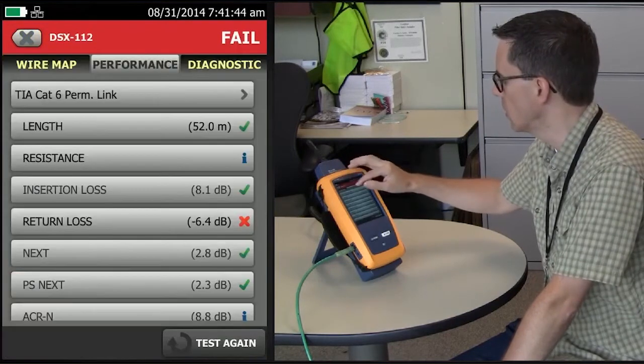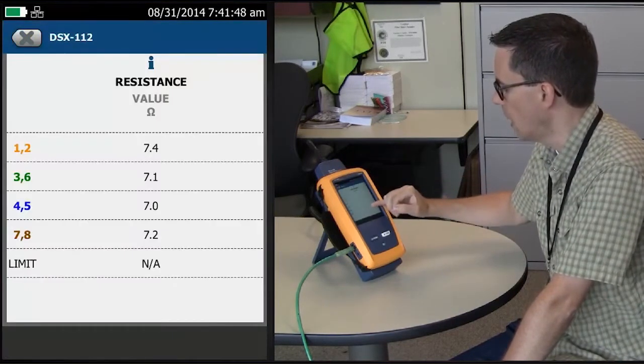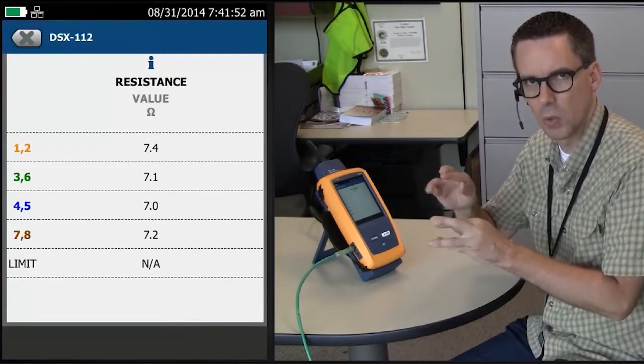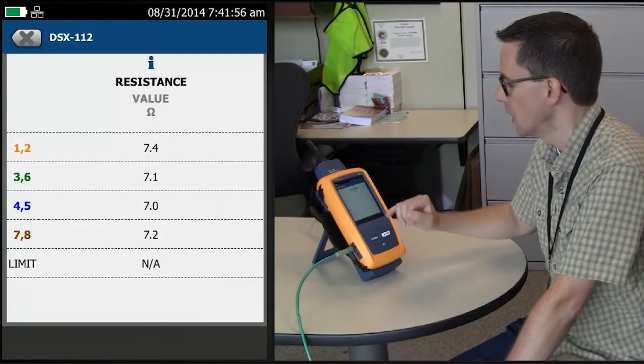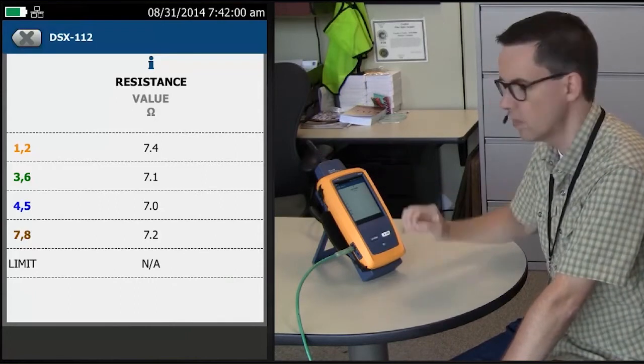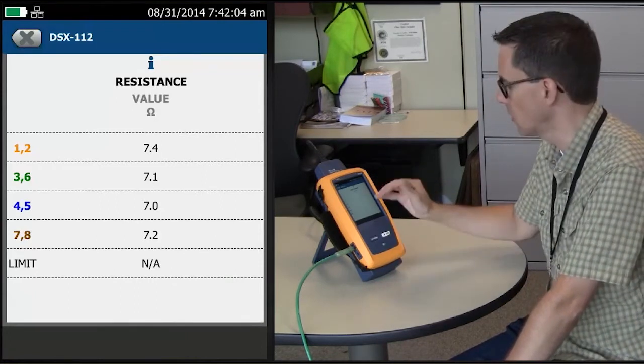So let's go and look at resistance. When we look at the resistance for four pairs, they are slightly different between each because that's the difference in the twist rates in the cable. But they're not significantly different. If they were more than an ohm and a half or two ohms difference between them, then I would be concerned about a DC contact resistance issue. That's not the case here.